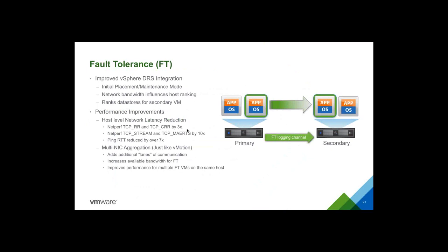Finally for FT, just like multi-NIC vMotion where you create separate VM kernel port groups and bind physical NICs, you can now do the same with FT — bonding multiple PNICs to create an increased virtual network channel. This gives additional lanes of communication between the primary and secondary host, especially useful for FT VMs producing a lot of bandwidth. So if you don't have 40 or 100 gig networking, you can bind multiple 10 gig NICs together and get the same benefit.